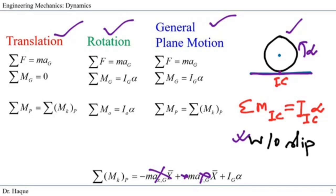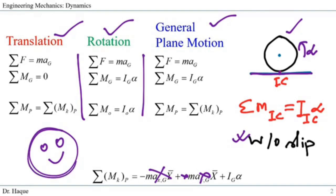That is the comparison of translation, rotation, and general plane motion. If you know which scenario your problem falls into, you can choose the equations you need to apply, making it easier to solve the particular problem scenario. In the next class, we are going to solve problems on general plane motion and rotation about a fixed axis. Thank you.